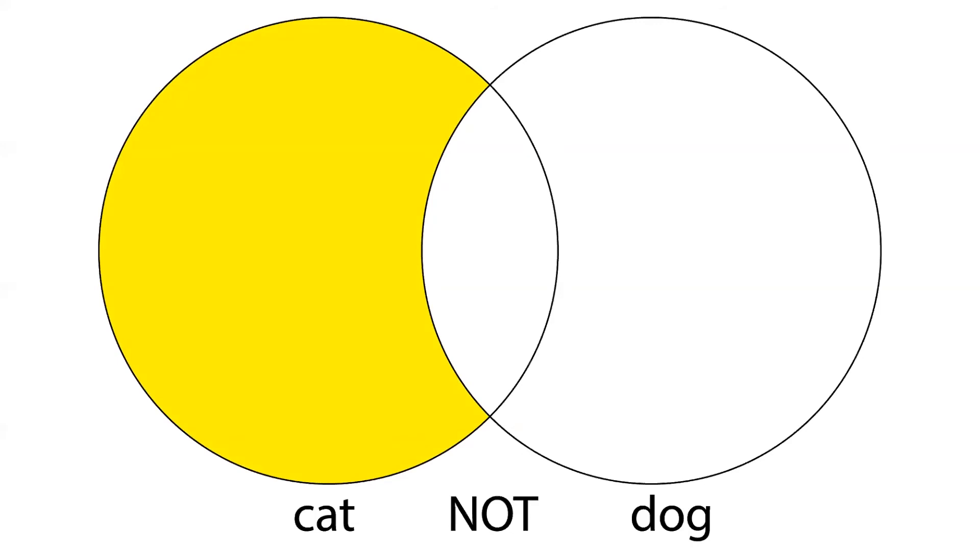We'll get back only the left side of the diagram and not the middle because those results contain the word dog, which we don't want.